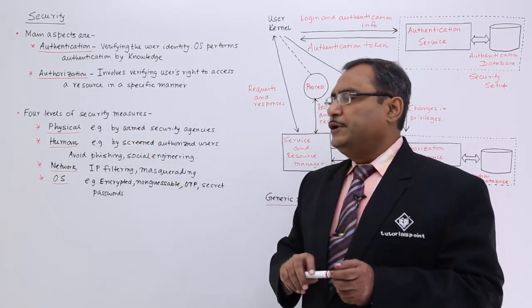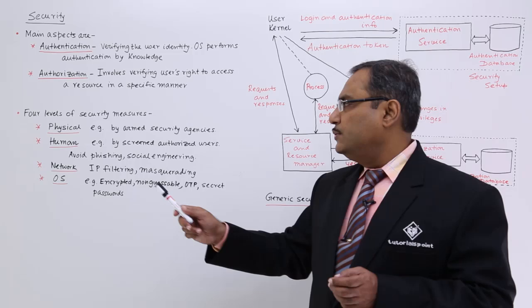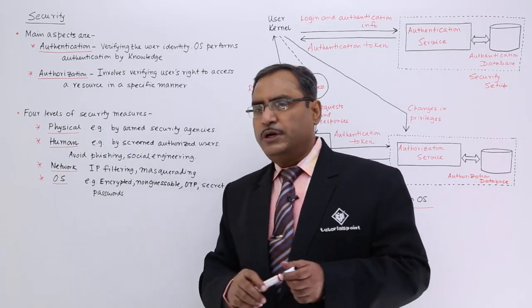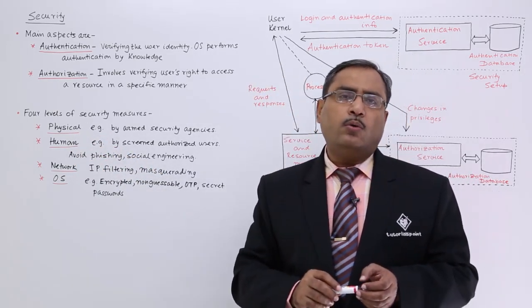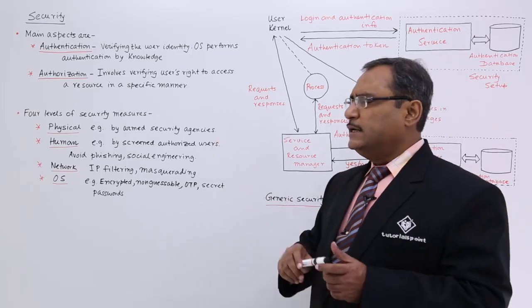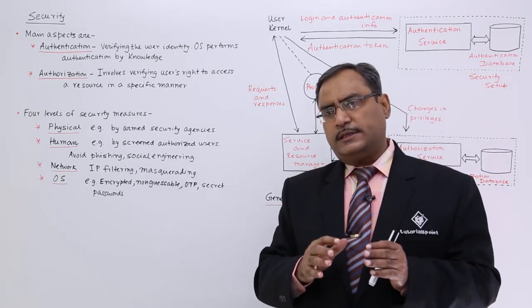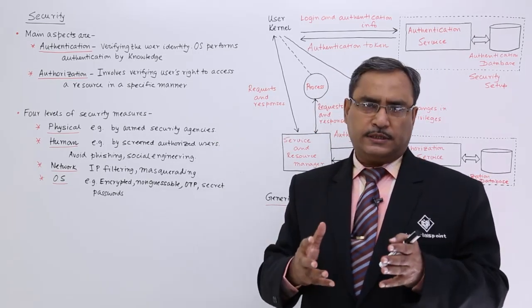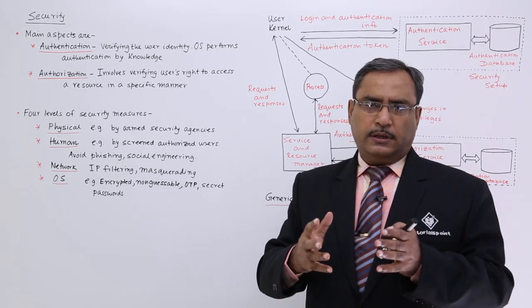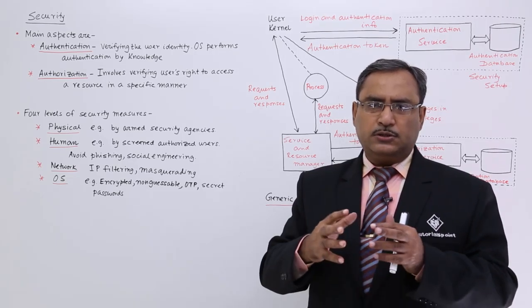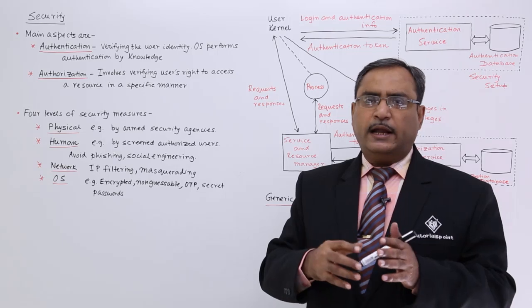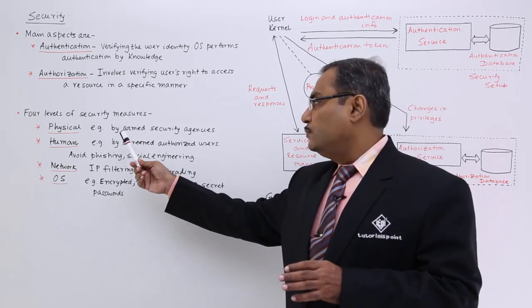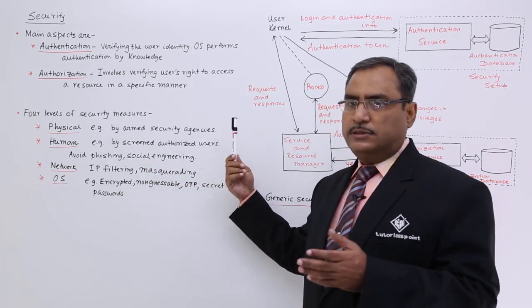And there are four levels of security measures. One is your physical, next one is human, network and then OS. So in case of physical means you are giving a physical security to the system. You might be having some armed forces and they are giving that security to the system. So that means whatever you are doing, you are just making that one physically available, by the armed security agencies or some other means.